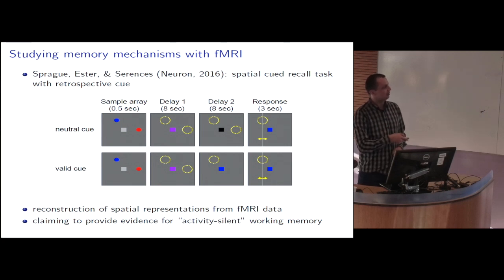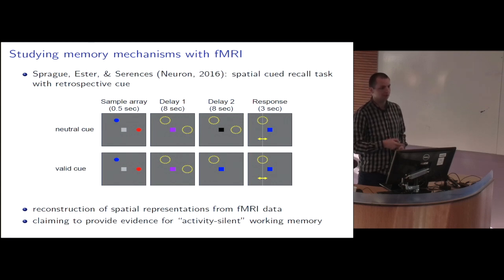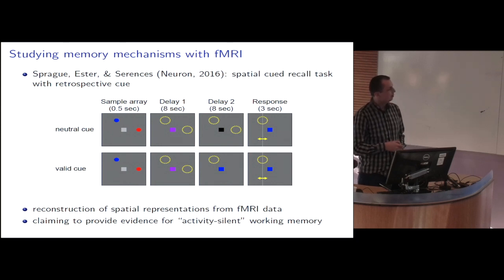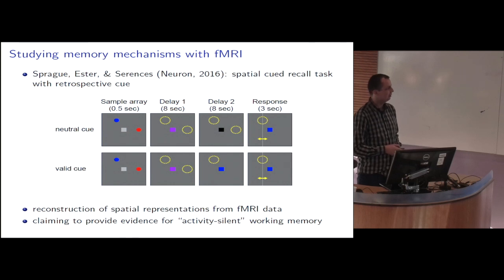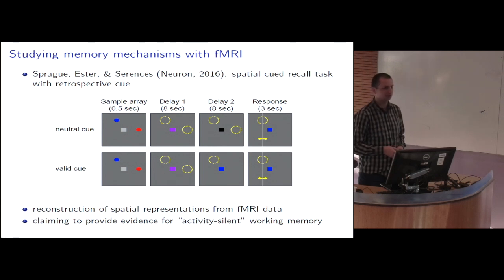It is known that this kind of cue, even given after the sample array is already gone, improves memory for the cued item at a cost for the un-cued items. The authors applied what they called an inverse encoding model to reconstruct the spatial working memory representations during this task from the fMRI data, and they claimed that their results provide evidence for activity-silent working memory — a working memory state that does not rely on sustained firing activity.